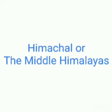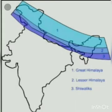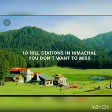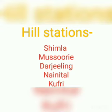Let us talk about the middle range of the Himalayas. The middle range is called the Himachal range. The Himachal range lies to the south of the Himadri. The peaks in the Himachal are not so high and are covered with coniferous forests — trees that are conical in shape. Many hill stations lie in this region; the well-known ones are Shimla, Mussoorie, Darjeeling, Nainital, and Kufri.